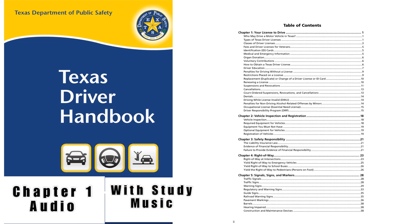Non-Residents: Any non-resident who is at least 16 years of age and possesses a valid driver license issued in the non-resident's home state or Canadian province may drive a vehicle permitted to be operated with a Class C or Class M driver license in Texas. Non-residents who are at least 18 years of age may drive any vehicle in Texas if they are legally licensed to drive such a vehicle in their home state or country, and the home state or country grants like recognition and reciprocity to citizens of Texas.